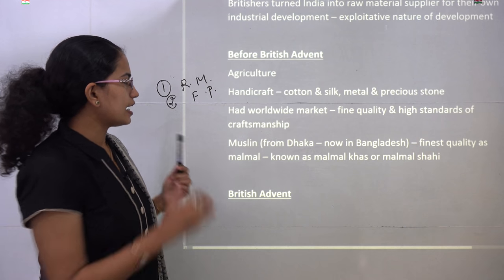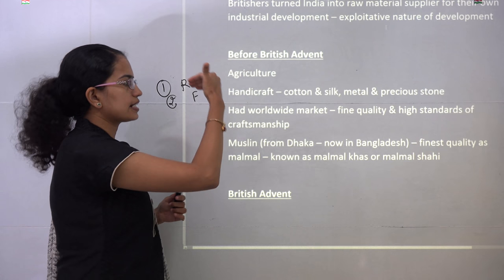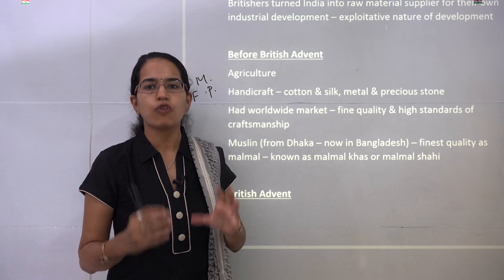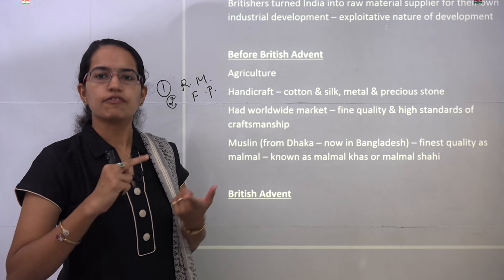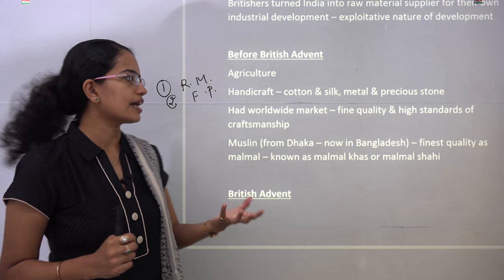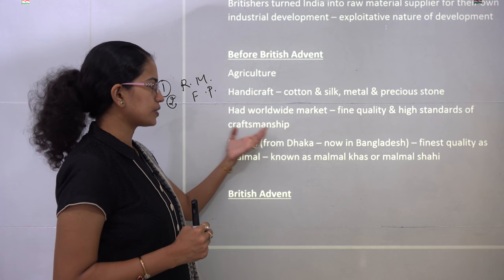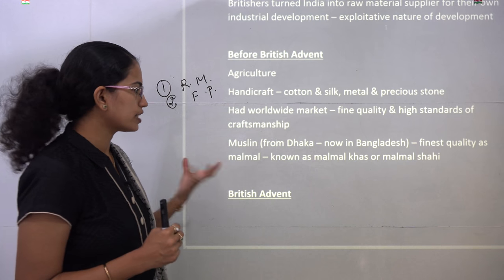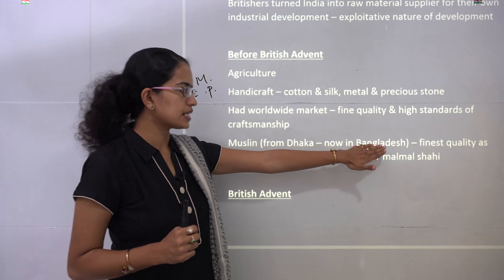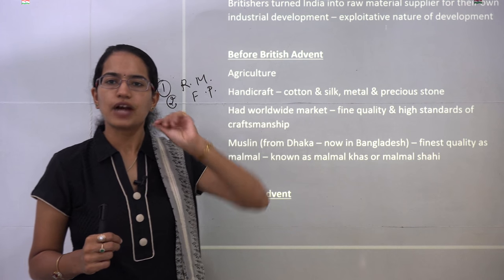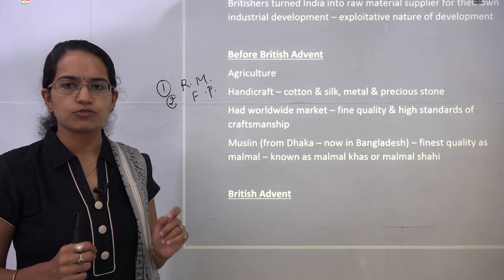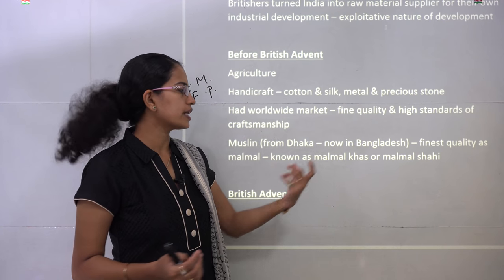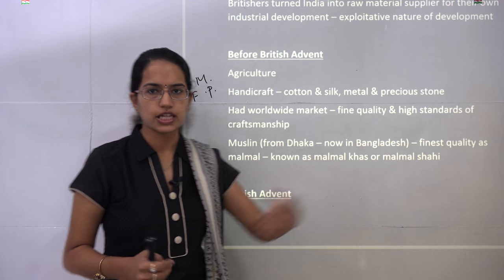The exploitation occurred in agriculture and in handicrafts. India was during that time known worldwide for the quality, fineness, and standards of craftsmanship. India was known for muslin, a kind of cotton that came from Dhaka, presently in Bangladesh. The finest quality of cotton was known as mal mal, and royal people also called it mal mal khas or mal mal shahi.